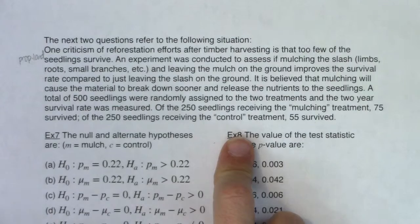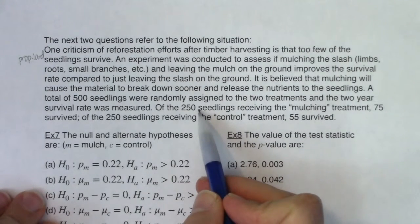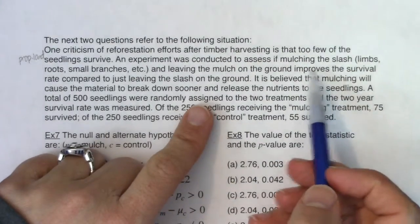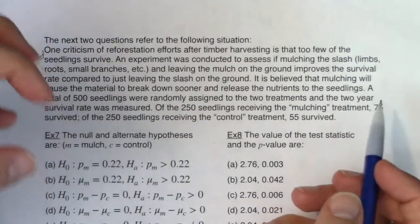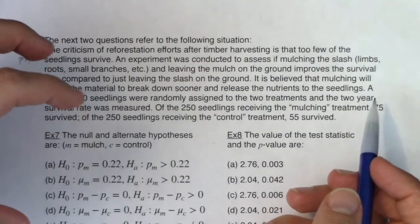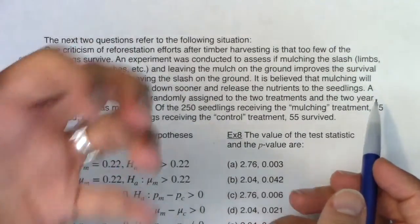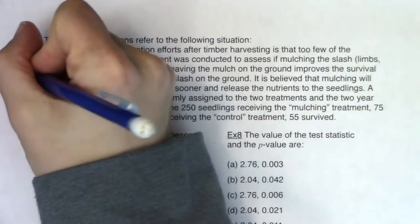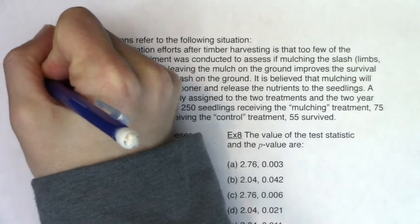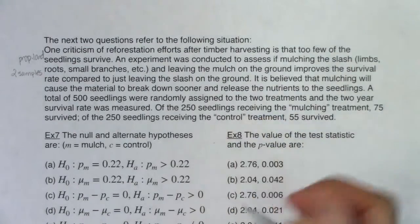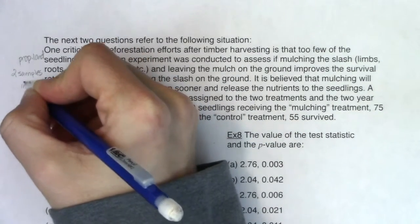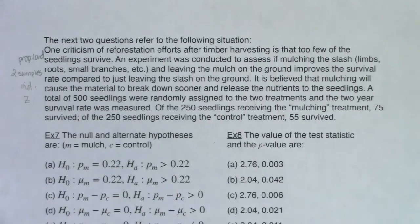I also see I have two treatment groups — two different samples: the sample that got the mulching treatment and the sample that got the control. When they say 'mulching the slash,' it means you're taking everything — cutting up all the leaves, small branches, and roots around the seedlings — and leaving them on the ground to seep in and provide a better living environment for the seedlings. I've got two samples here, we're in proportion land, and since the survival rate of the mulch group won't affect the control group, these are independent. I know I'm going to be running a z-test.